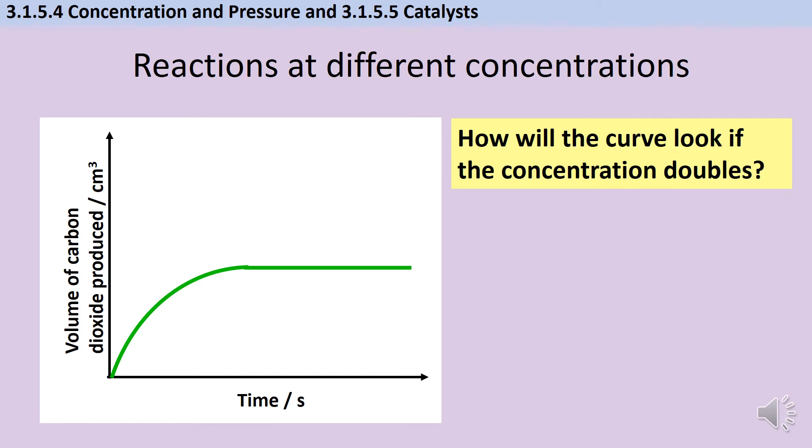Again, most people remember that the graph is going to need to be steeper, but they sometimes forget to think about where it's going to finish. If the concentration of the limiting reagent is going to double, then the amount of product made is also going to double, so the curve needs to finish at double the height.